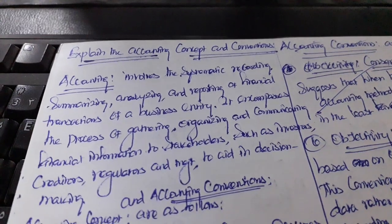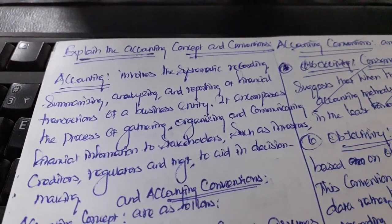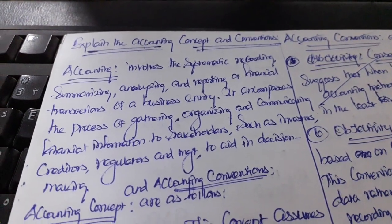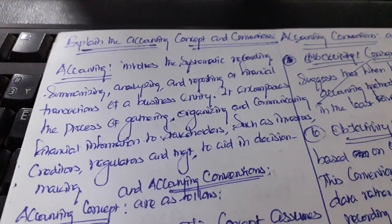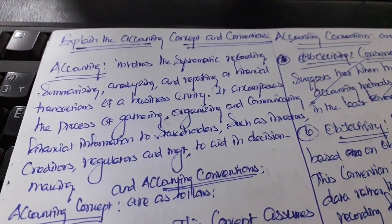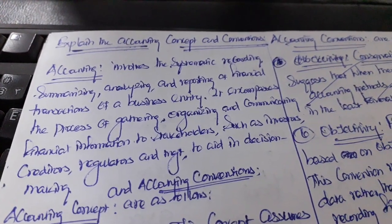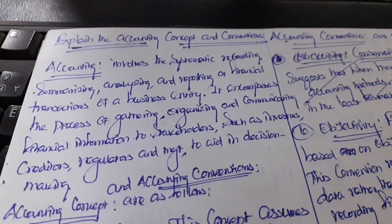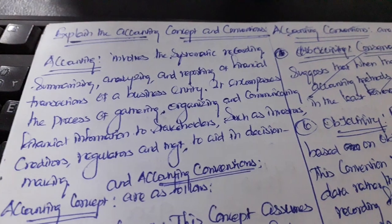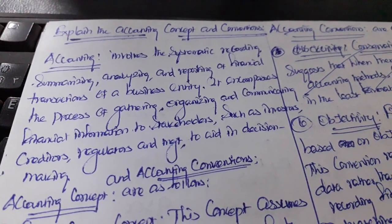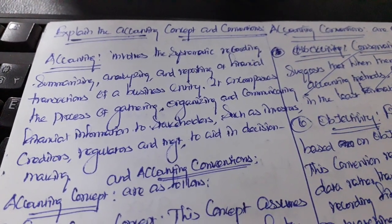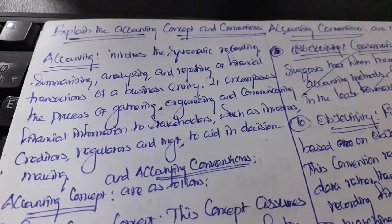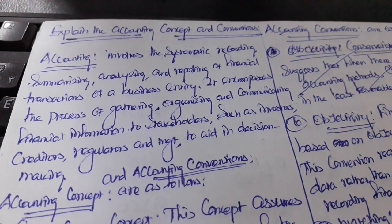Good evening. Today's topic is all about explaining accounting concepts and conventions. First, let's look at the meaning of accounting. It involves the systematic recording, summarizing, analyzing, and reporting of financial transactions of a business entity. It encompasses the process of gathering, organizing, and communicating financial information to stakeholders such as investors, creditors, regulators, and management.